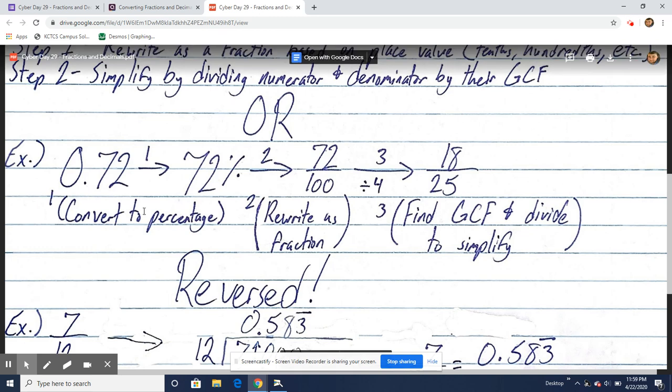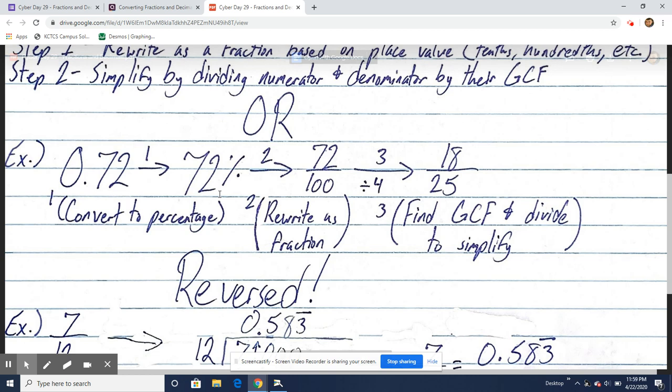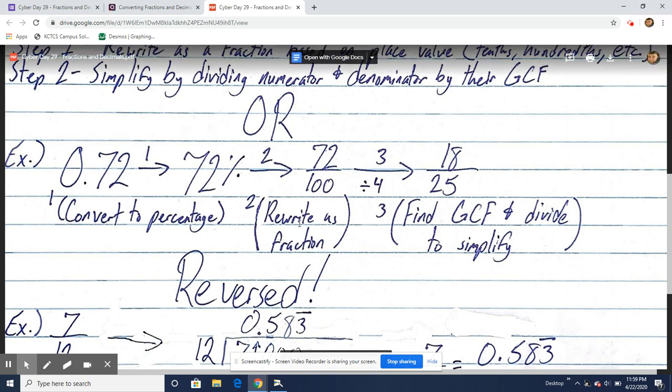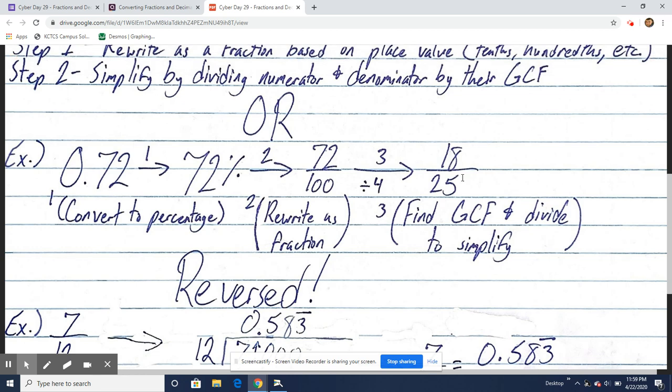So here we had 72 hundredths. Step 1: Convert to percentage, 72 percent. Step 2: Rewrite as a fraction, 72 over 100 because percents are always out of 100. Step 3: Divide by greatest common factor of 4, getting 18 over 25.